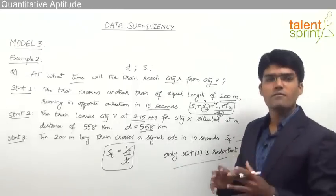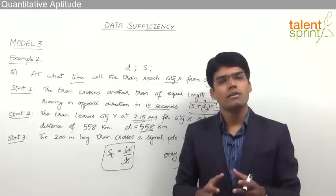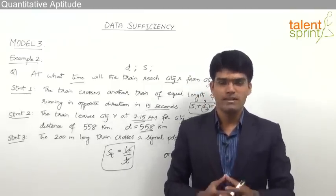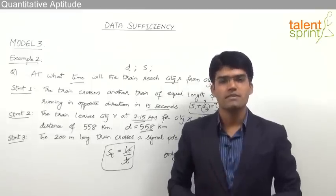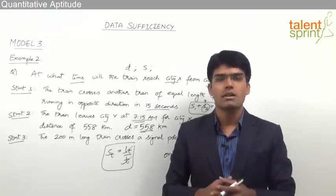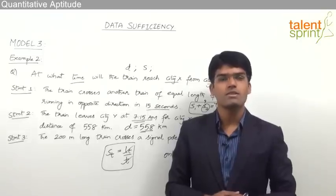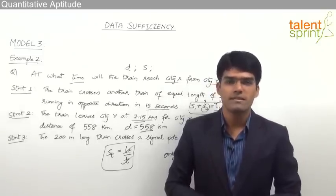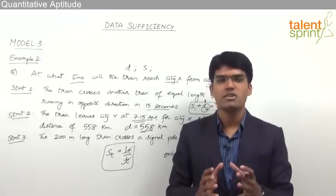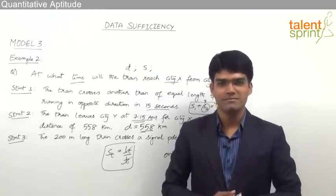We only have to find which statements are required, and based on that the remaining statements are not required or useful. This is the third model from data sufficiency. Remember, you need not solve the complete question — only check the sufficiency of the given data. Since this topic carries 5 marks, practice well and make sure you bag those marks in the exam. See you in the next session. Thank you.